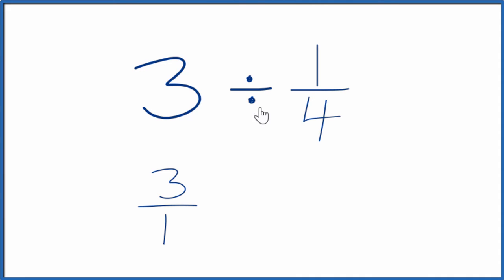And instead of division, let's multiply by the reciprocal of one-fourth. We get the reciprocal by taking the numerator, moving it down here and the denominator up top. So the reciprocal for one-fourth is four over one. So we multiply by the reciprocal of one-fourth.